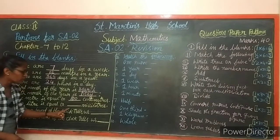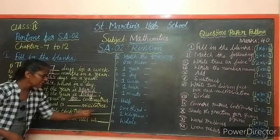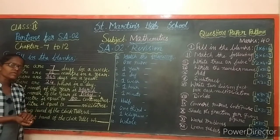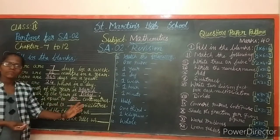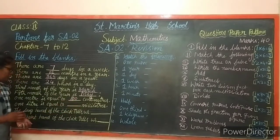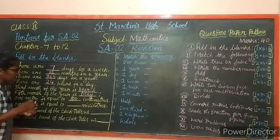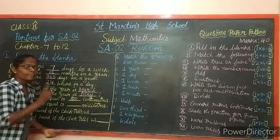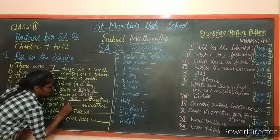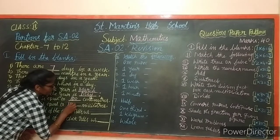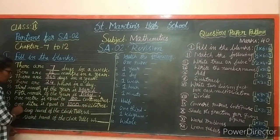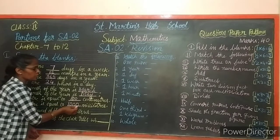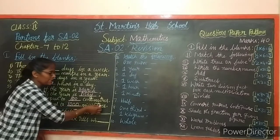Next: one liter is equal to dash milliliters. Liquid items are measured by liters and milliliters. One liter is equal to 1000 milliliters.